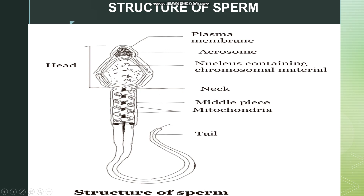Now let us learn the structure of the sperm. The sperm consists of a head, a short neck, a middle piece, and a tail. The head contains a haploid nucleus. At the anterior end there is a cap-like structure called the acrosome, which contains enzymes that help the sperm to enter the egg. The middle piece is rich in mitochondria and provides sufficient energy. The tail helps in the movement of the sperm. The whole body is enveloped by the plasma membrane.